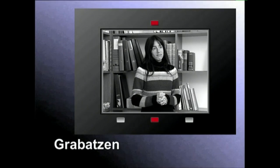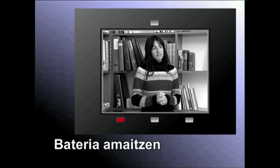Ikusgailuaren pantailan beste ohar jakingarri batzuk ere eskaintzen zaizkigu. Euren bitartez, gure bideokamerak zer grabatuko duen eta nola grabatuko duen jakingo dugu. Argi gorri batek bideokamera grabatzen ari dela adierazten du. Argi gorri keinukari batek bateriaren karga amaitzen ari dela adierazten du. Grabatzen ari garen irudiari ezarritako amplifikazio mailaren berri ematen du beste argi batek.